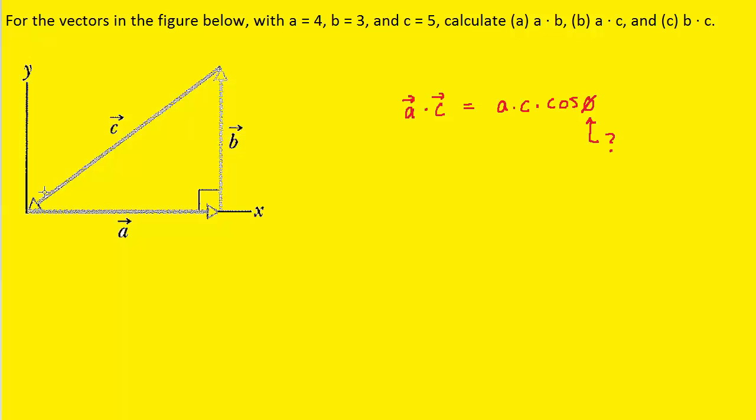In order to determine the angle between vector C and vector A, we have to align the vectors so that they are tip to tail.